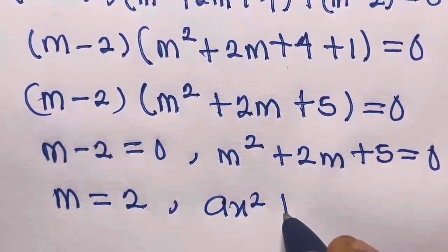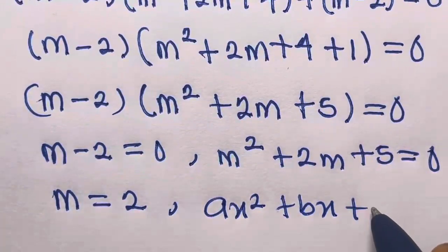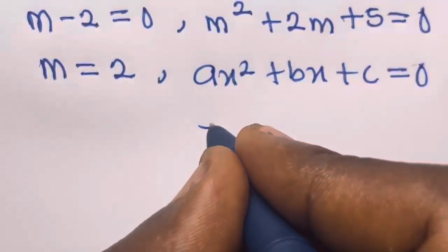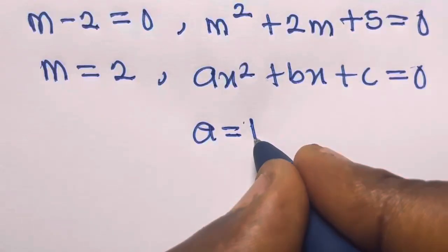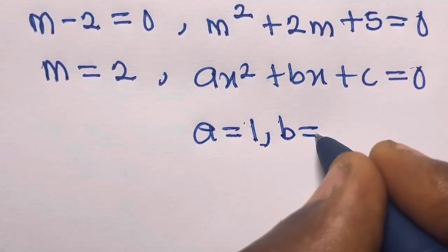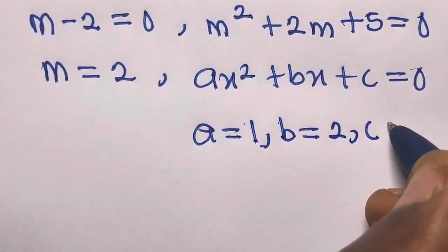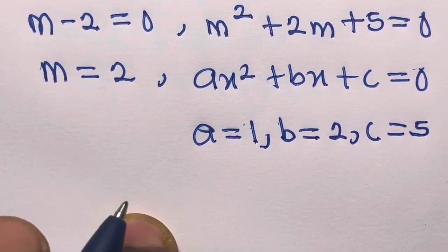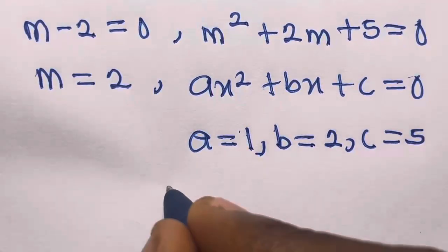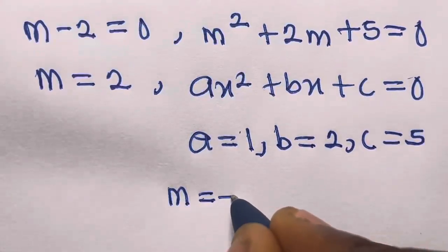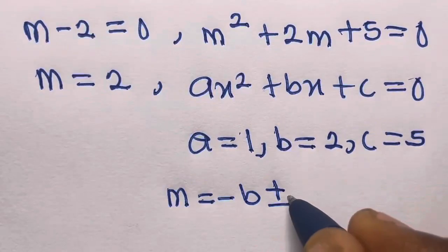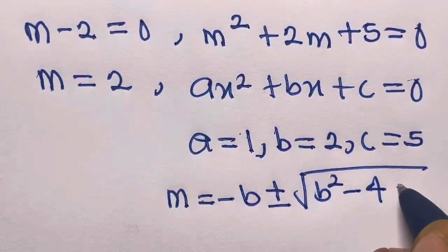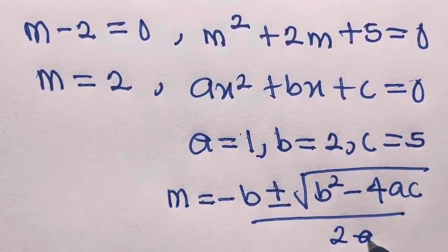So we have M minus 2 equals 0, or M squared plus 2M plus 5 equals 0. For the quadratic, we identify a equals 1, b equals 2, and c equals 5. Using the quadratic formula: M equals negative b plus or minus square root of b squared minus 4ac, divided by 2a.